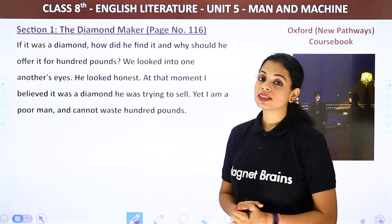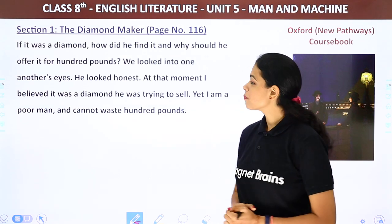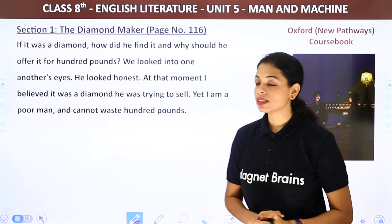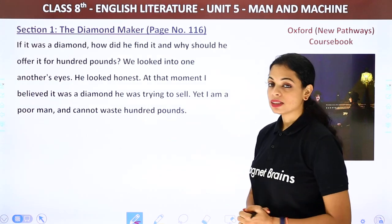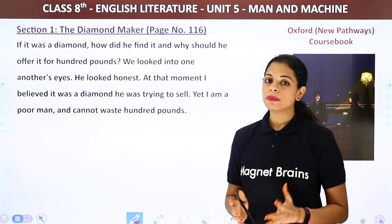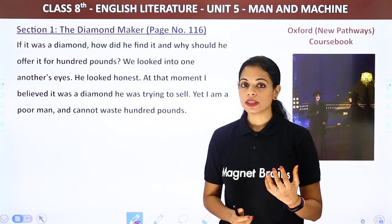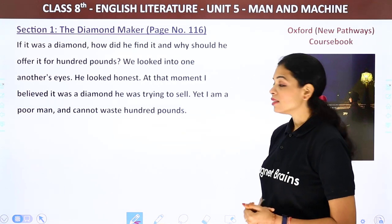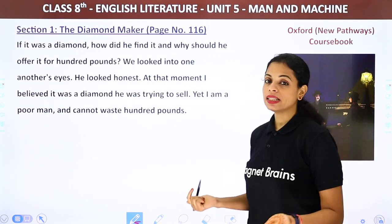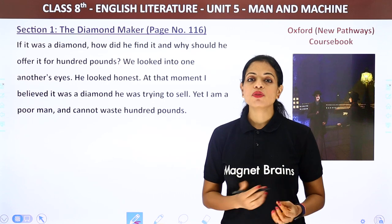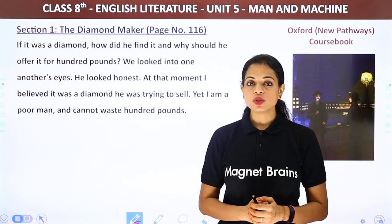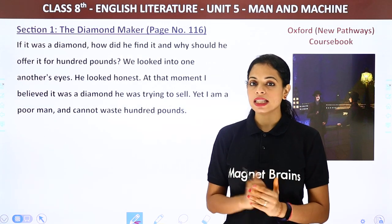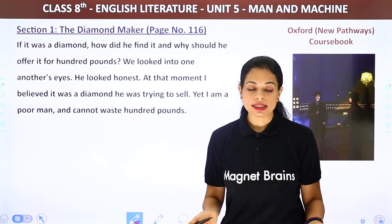They looked into one another's eyes. The stranger looked honest. At that moment, the narrator believed it was a diamond he was trying to sell. Yet he was a poor man and could not waste 100 pounds. He was from a middle-class family, with just enough money for a simple livelihood — 100 pounds was beyond his means.